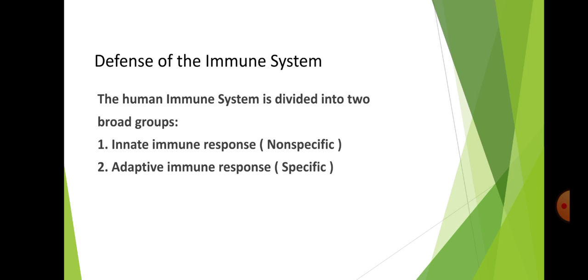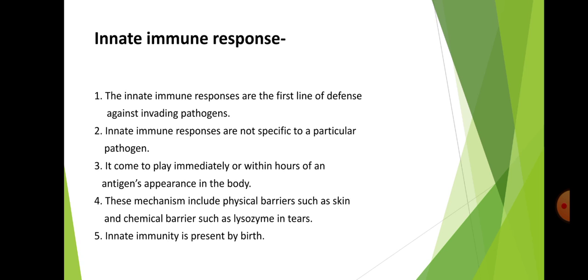The human immune system is divided into two broad groups. The first is the innate immune response, or innate immunity, which is the first line of defense and non-specific. The second is the adaptive immune response, or adaptive immunity, which is the second line of defense and is highly specific with memory.